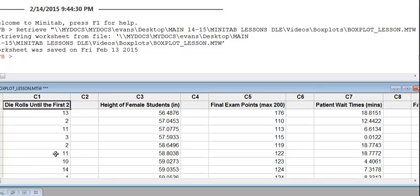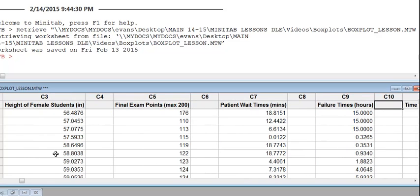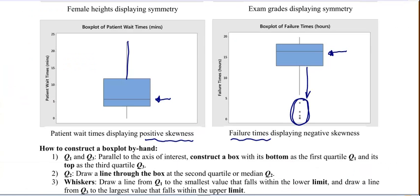And I should mention, if you wanted to create these data, these four plots that I have here, the data is included in the box plot lesson Minitab worksheet. Here's the die rolls until the first two example. Here's the height of females I used, final exam points, patient wait times, and failure times. So if you wanted to check yourself later that you could get these plots, here's the data in the Minitab worksheet. So I'll stop it here and I'll look forward to talking to you again about constructing a box plot. So until then, I'll see you and we'll talk soon.